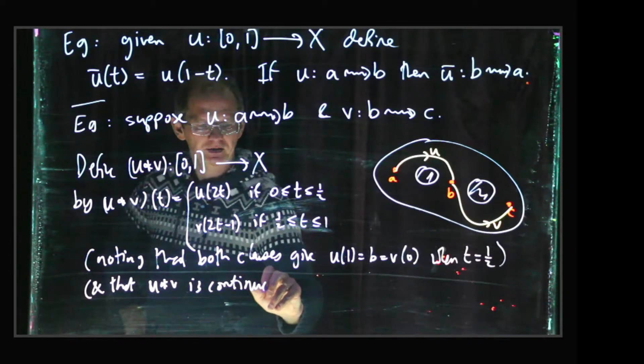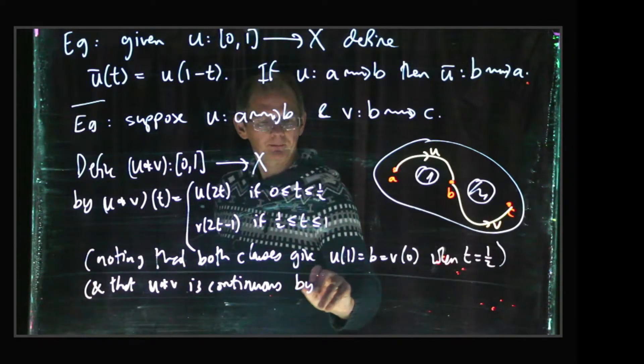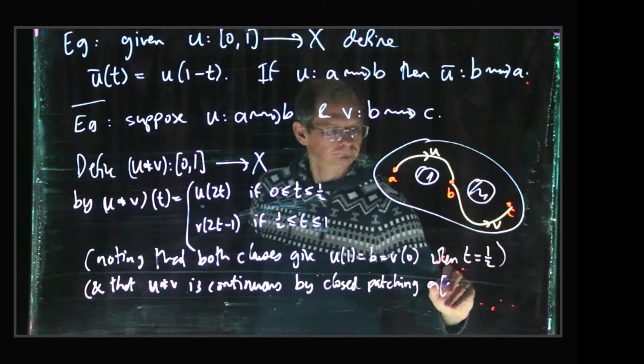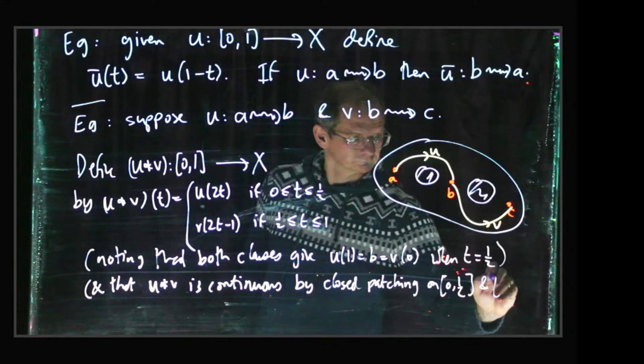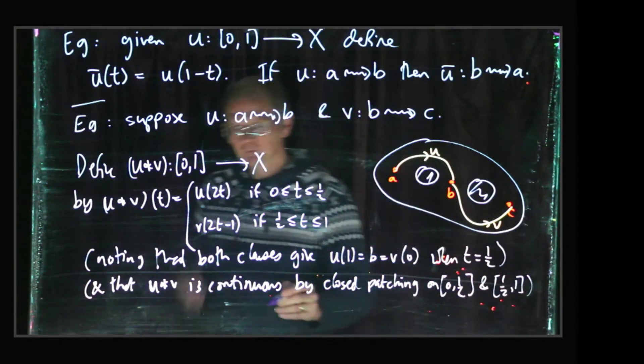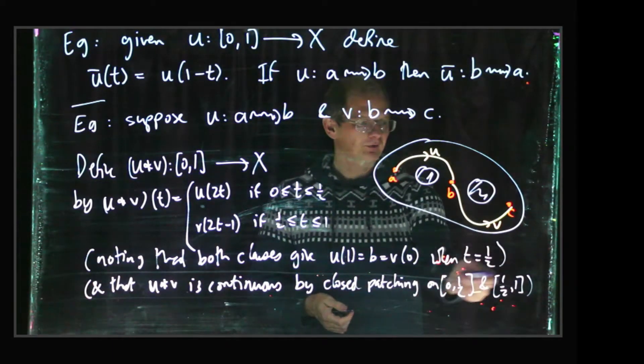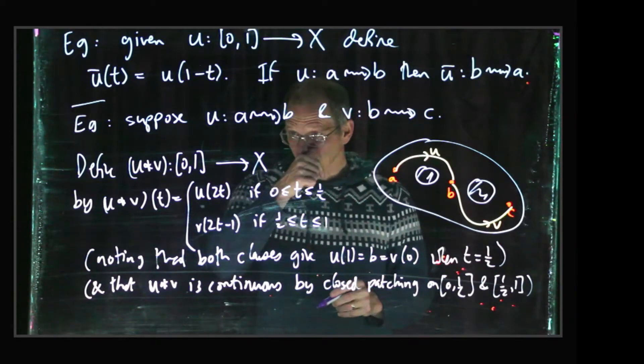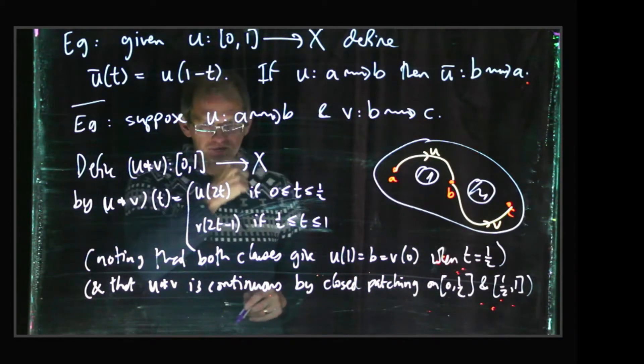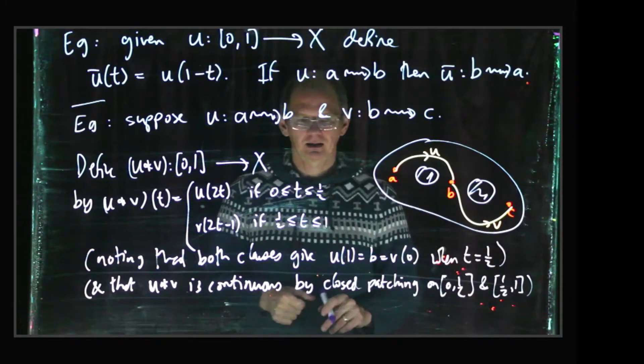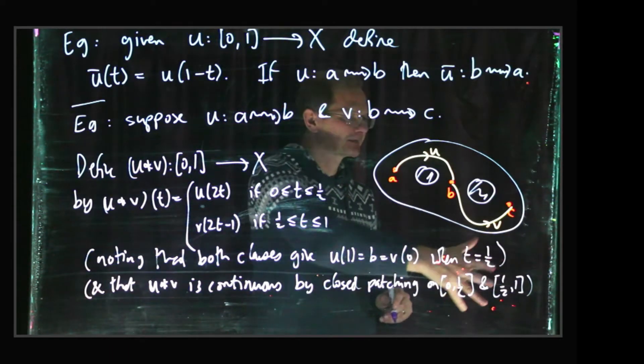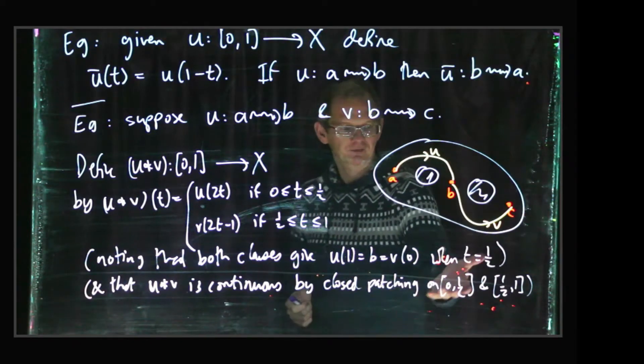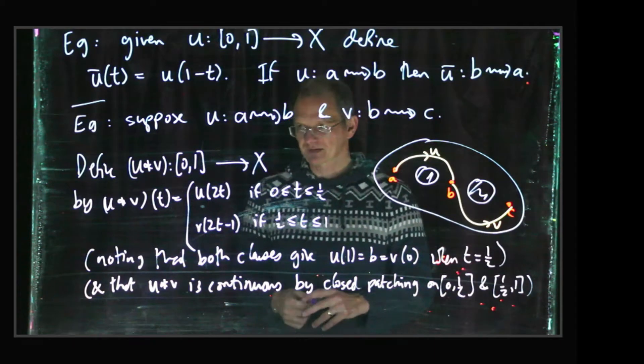And the other thing we need to note is that this is actually a continuous map. So why is that? That's kind of by this closed patching lemma. Okay, so we've got the, we can divide the unit interval up into the left half and the right-hand half, these are both closed sets, and it's kind of clear that on this first set [0, 1/2], this first clause is operational, so this is just the composite of u with the map sending t to 2t, so that's going to be a continuous map. And then on this other thing, it's just the composite of the continuous map v with the map sending t to 2t minus 1, so that's also continuous. So the function is continuous on both of those two closed sets, and the two closed sets cover the unit interval, so by this closed patching lemma we see that we've got a continuous map.